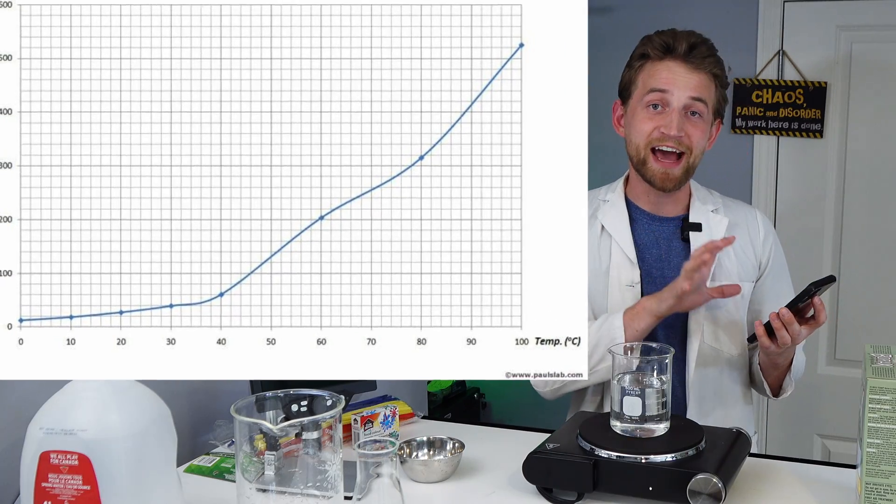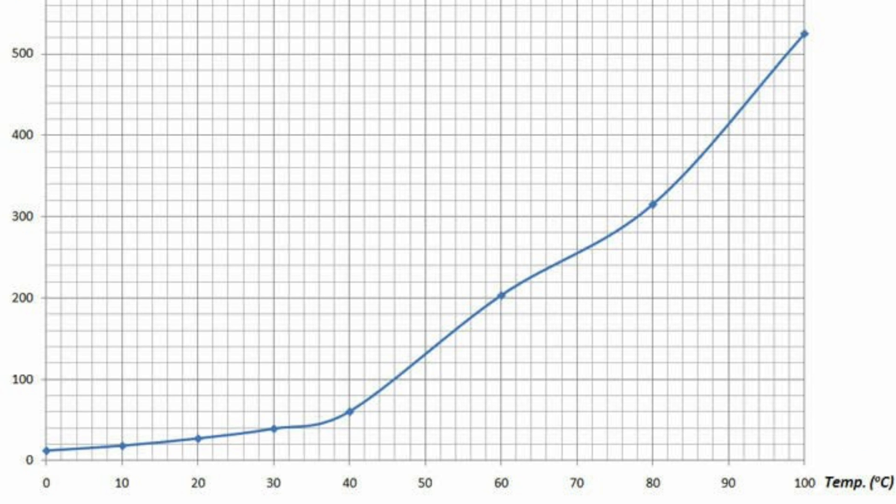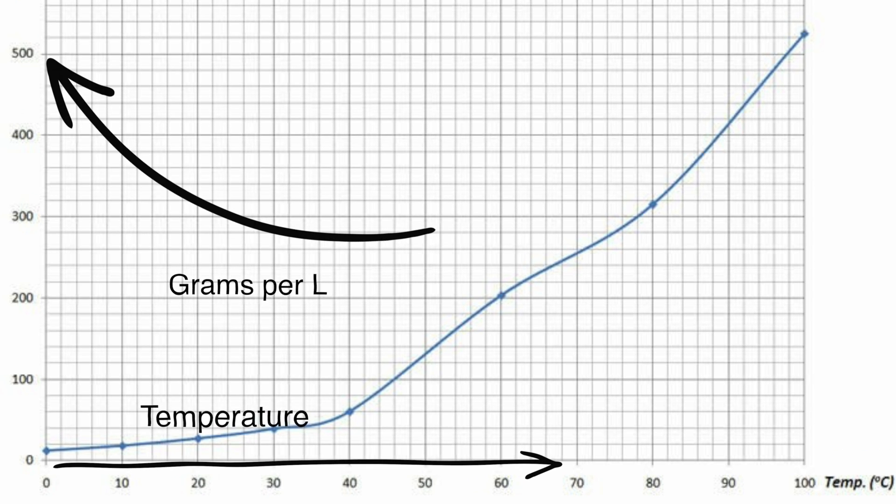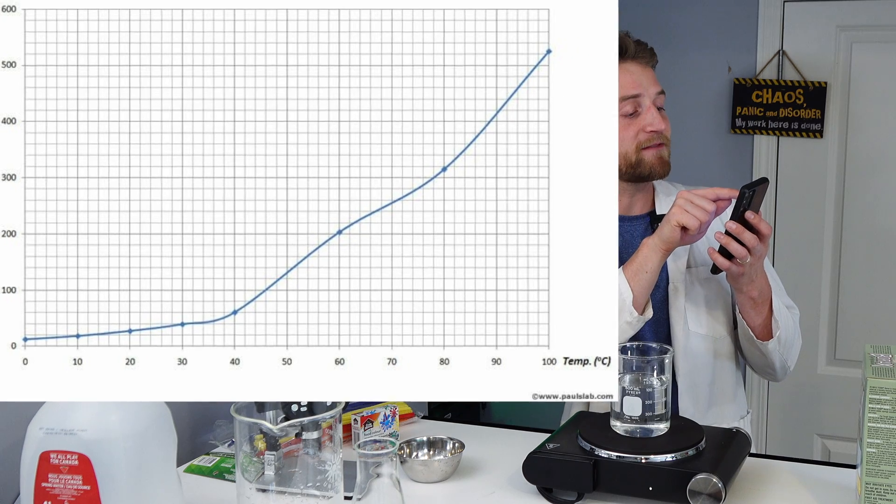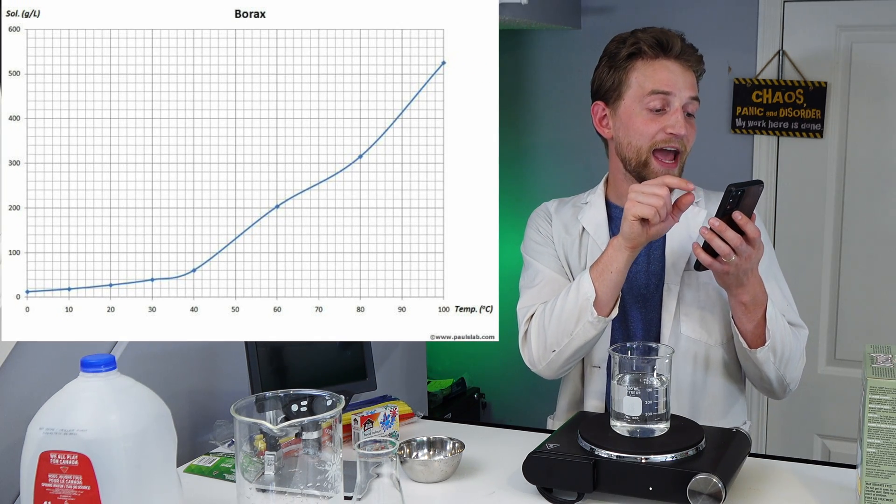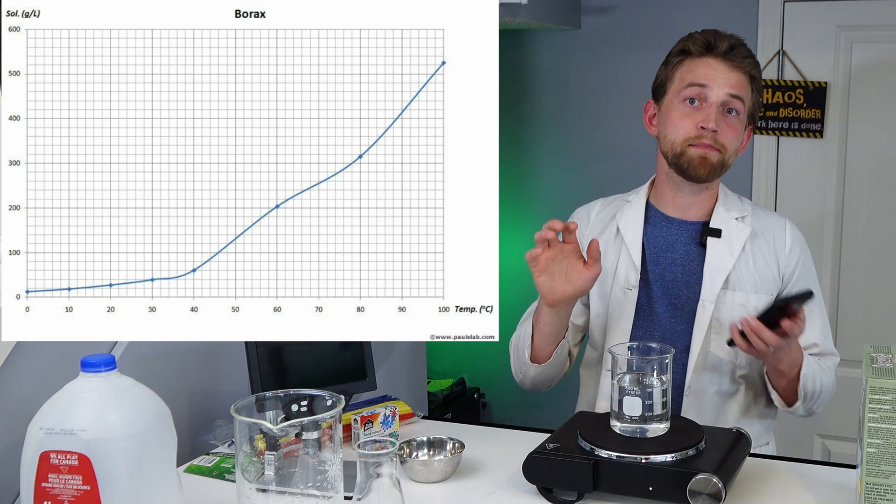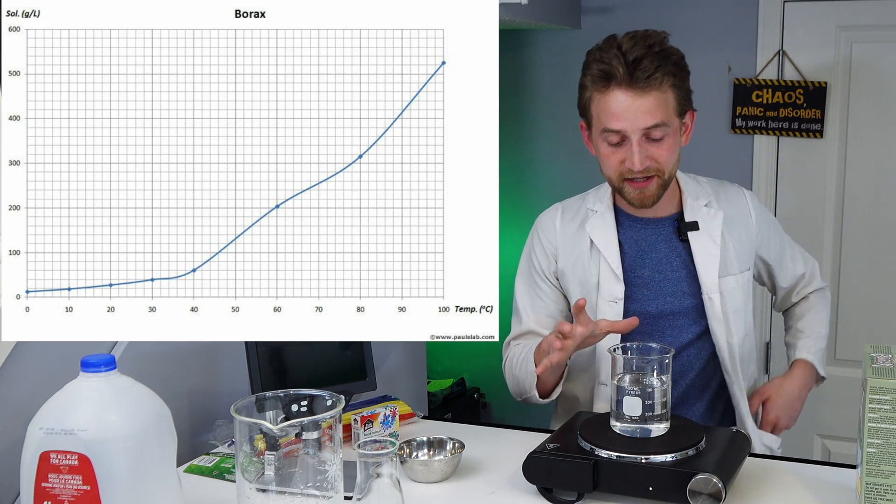So if you look at the solubility graph that I have here of borax, which is sodium tetraborate, on the horizontal axis, we have the temperature in Celsius. On the vertical axis, we have the solubility of borax in grams per liter. So we see that there's going to be 400 grams per liter at 90 degrees Celsius. And some quick maths, that's going to be about 160 grams in 400 milliliters of water.